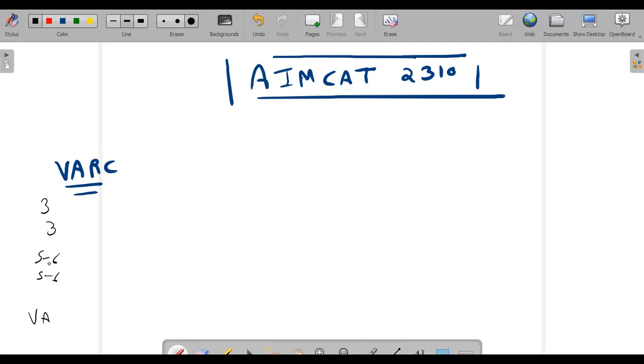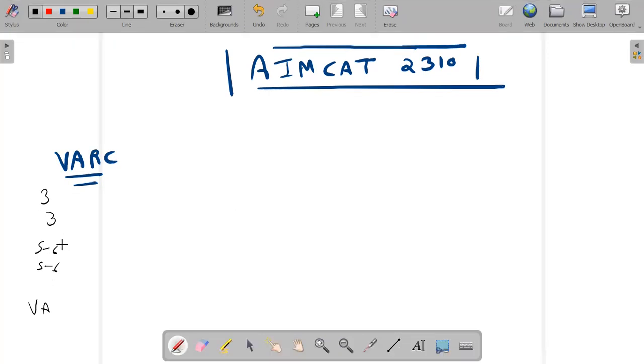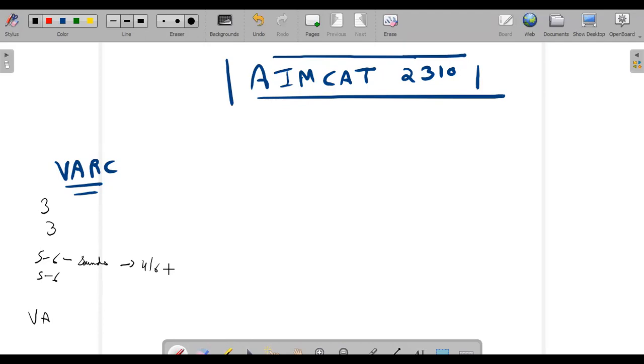The first passage revolves around different types of sounds and how these sounds disturb you. The questions are pretty simple with hardly any close choices, so four out of six could be gained here.